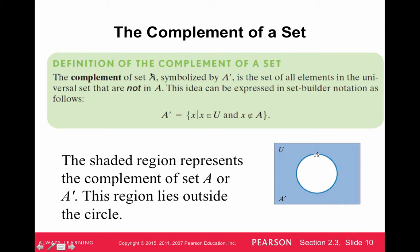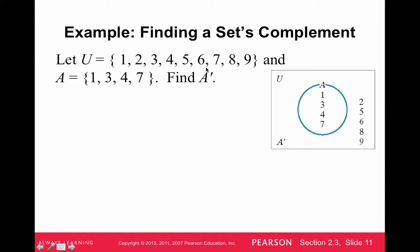The complement of a set, symbolized with an apostrophe like A', is the set of elements in the universal set that are not in A. The shaded region outside of A represents the stuff that's not in A. For example, if the universal set is the numbers 1 through 9 and A is the set {1, 3, 4, 7}, then the complement of A would be {2, 5, 6, 8, 9}.